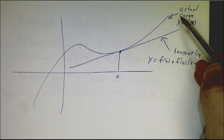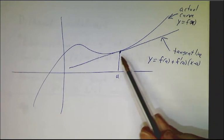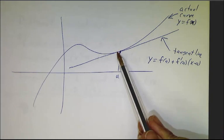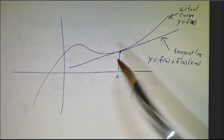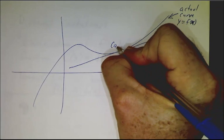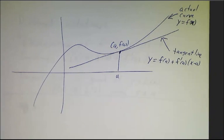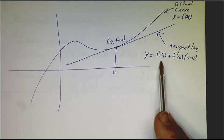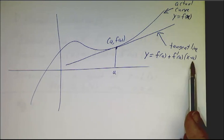The tangent line is going with a slope of f'(a) and it goes to the point (a, f(a)). So if you write down what the equation of the tangent line is, it's given by exactly y equals this expression that we just talked about.